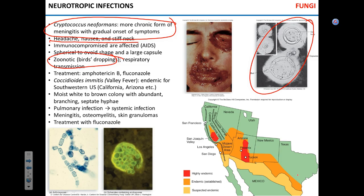Unlike Coccidioides immitis — also called valley fever — which is endemic to the southwestern U.S.: Southern California, Southern Arizona, New Mexico, and Texas. It can be acquired from the environment. It starts with a pulmonary infection that quickly becomes systemic and can cause meningitis. Again, immunocompromised people are at higher risk.